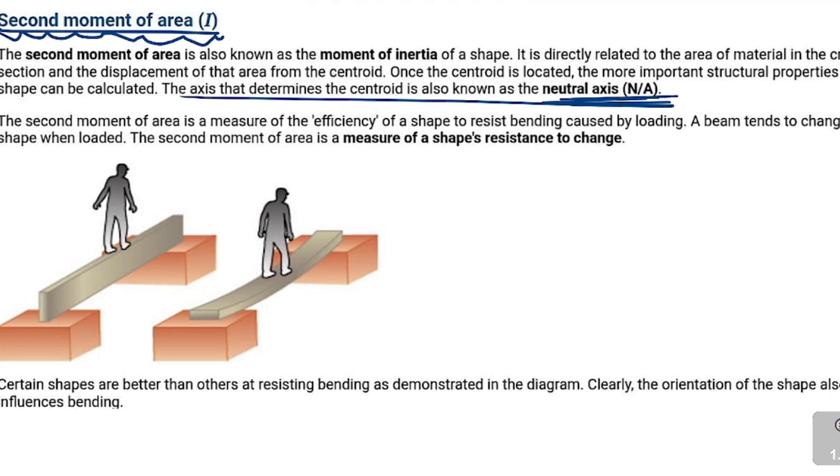A beam tends to change shape when it is loaded, and the second moment of area is a measure of a shape's resistance to change. That's what I'm talking about - the stiffness. If it's stiff, then it resists the change to its shape. Certain shapes are better than others at resisting bending, as demonstrated in the diagram.